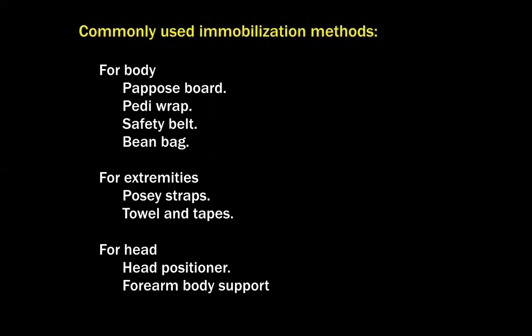Commonly used immobilization methods for the body include the Papoose board, Pedi Wrap, safety belt, and bean bag. For the extremities, devices used include Posey straps, towel, and tapes. For the head, head positioners and forearm body support are used.